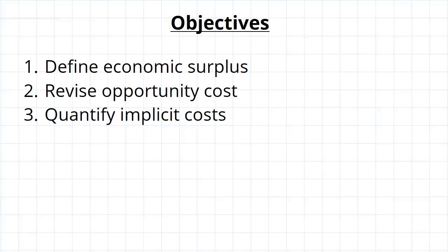We're going to introduce the term economic surplus, revise opportunity cost because it's a really important concept and we have to make sure that's thoroughly understood, and we're going to have a look at how we can put a number to certain implicit costs, because we saw previously that there are implicit costs that were fairly qualitative, but putting a number to them can be really useful in decision making.